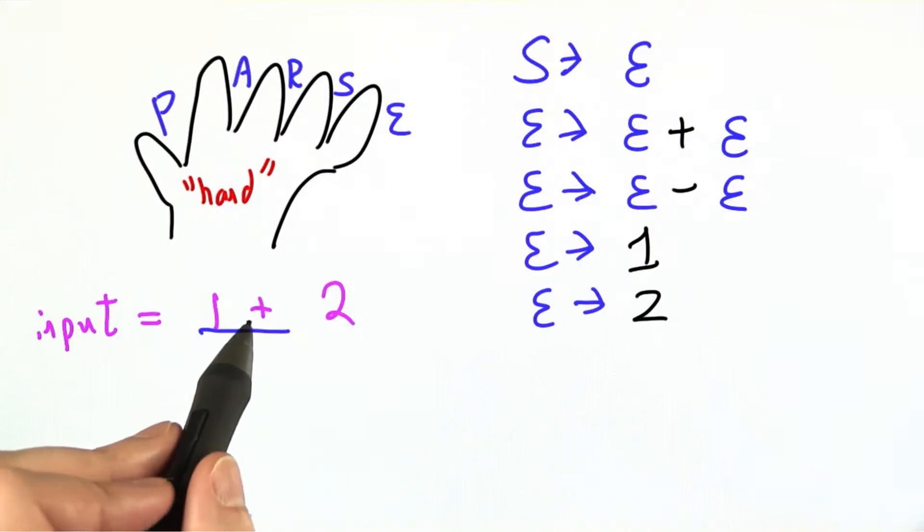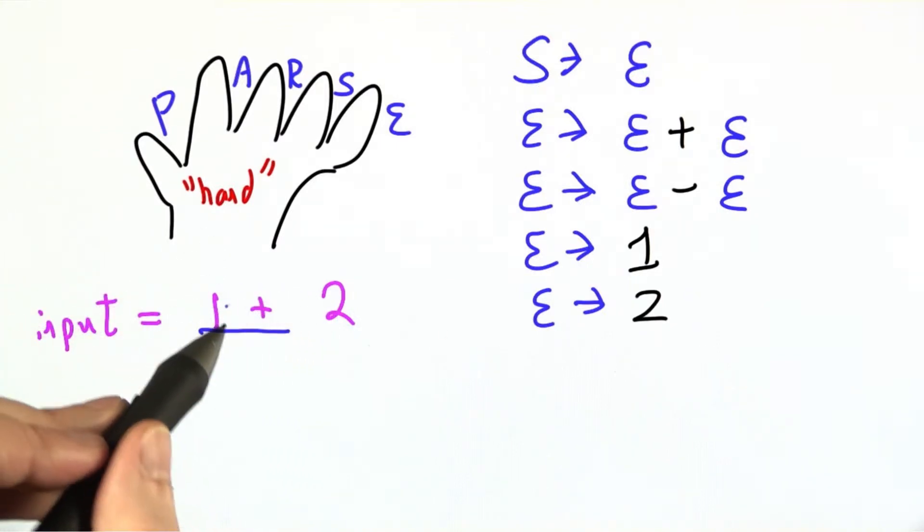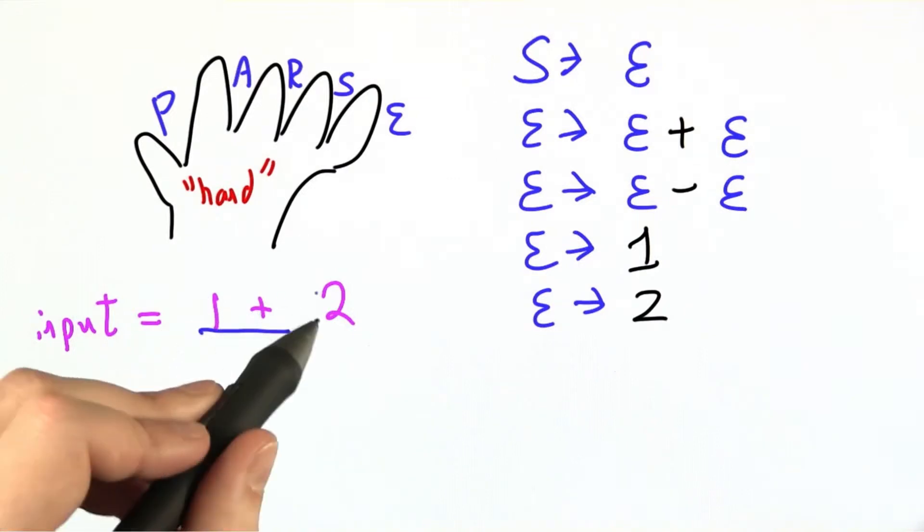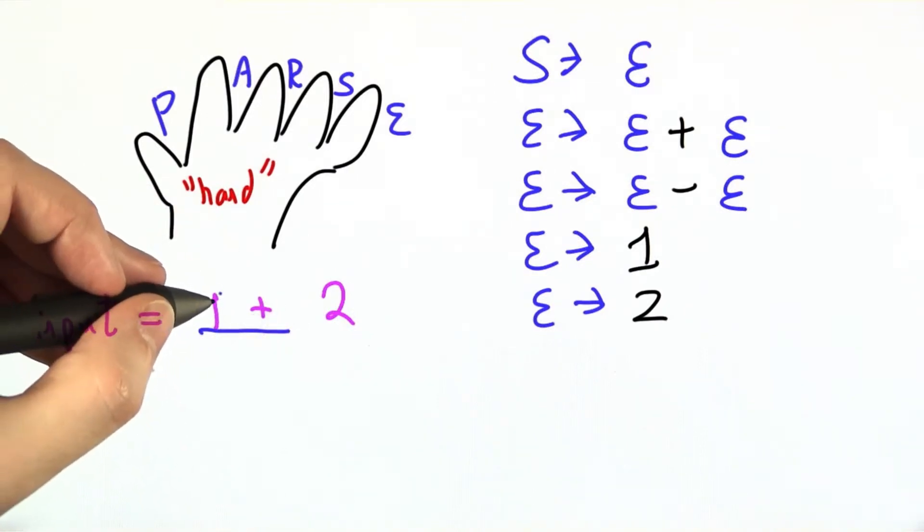Remember that to figure out if something was in the language of a finite state machine, we'd look at one character at a time. We're going to do pretty much the same thing for parsing. We're going to look at one token at a time. But the question is, where are we now?